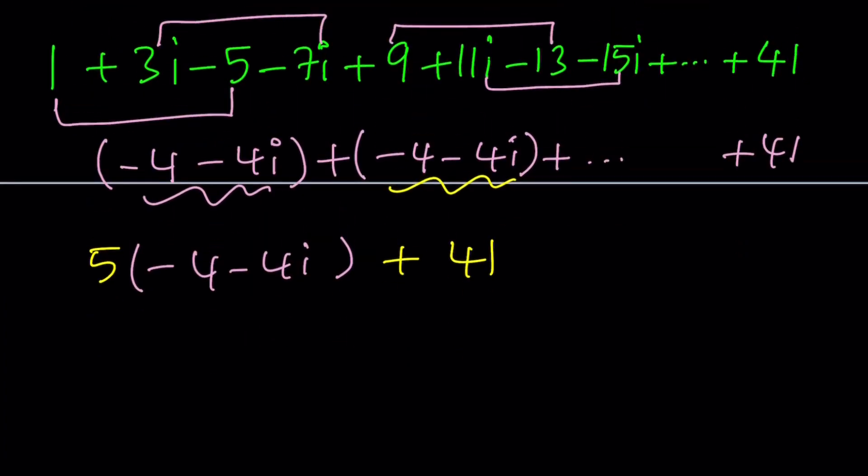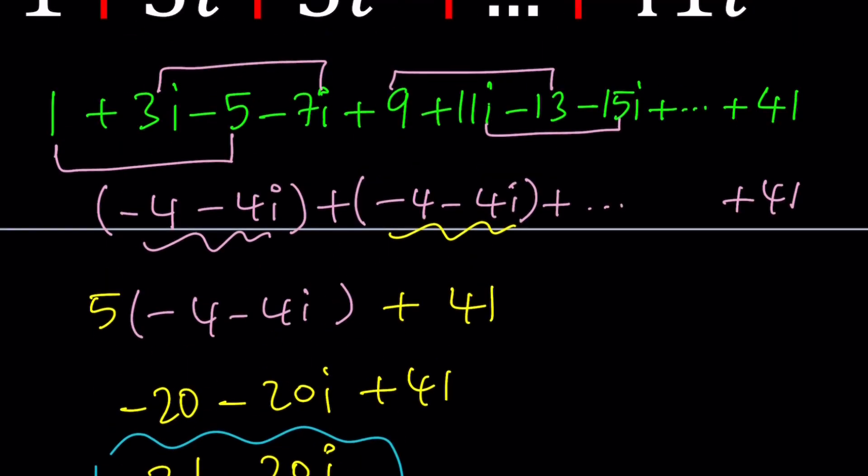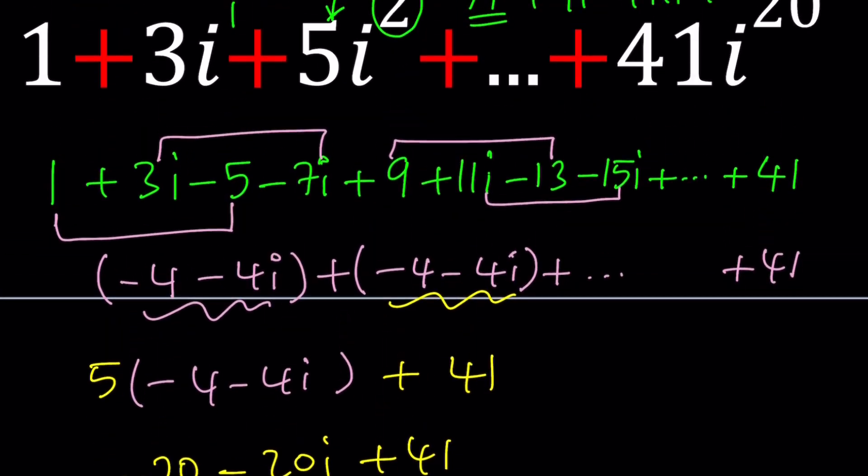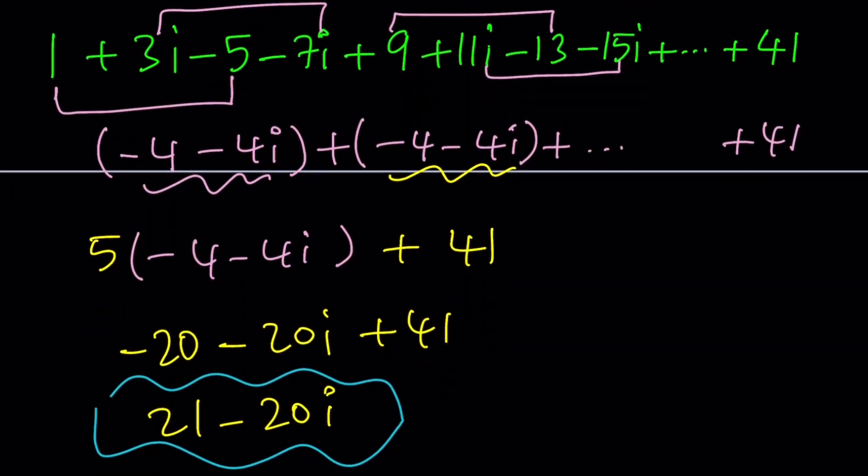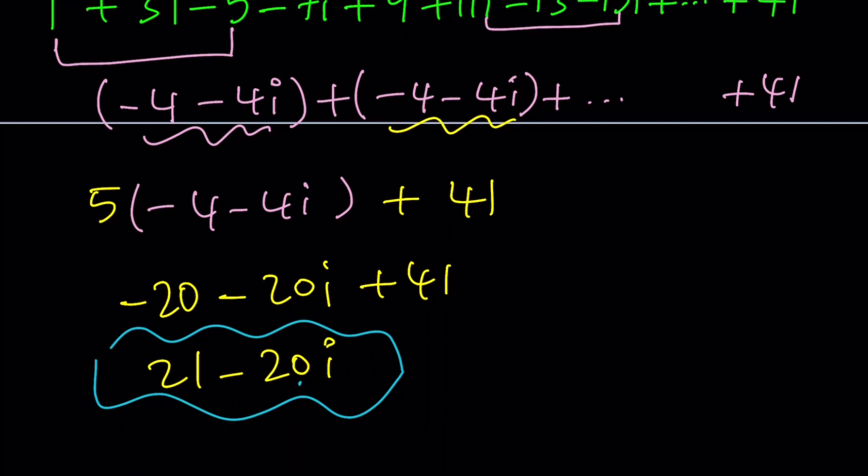5 times negative 4 is negative 20. Distribute the 5: negative 20i plus 41, and this is going to give us 21 minus 20i. Here's something interesting about this result. Notice that the last term had an exponent of 20, and that kind of showed up here, and then 21 is just one more than that. So is that a coincidence, or is it always going to be like that? That's a good question. Let's go ahead and take a look at an alternative.